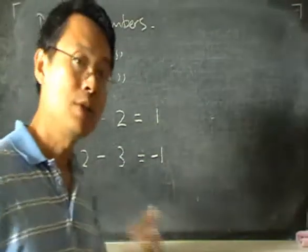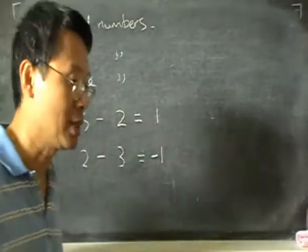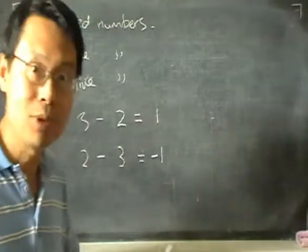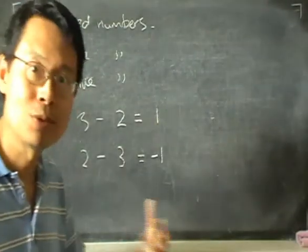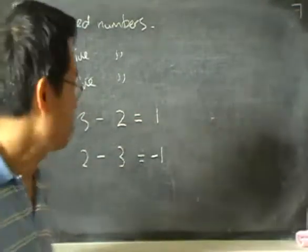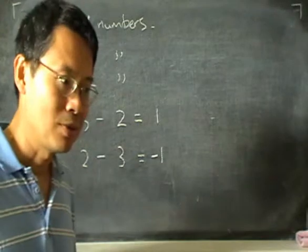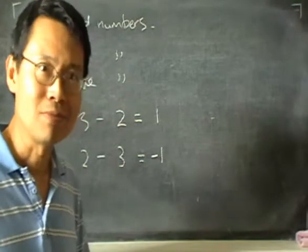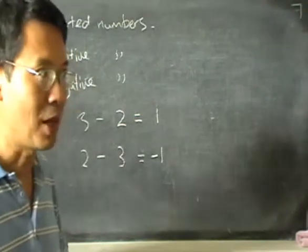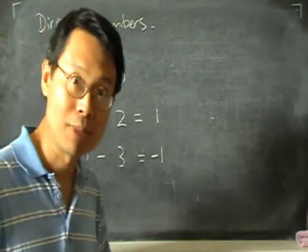But what is the use of having negative numbers? I mean, you can count things with positive numbers, right? If you are counting apples, you can count 1 apple, 2 apples, 3 apples and so on. So positive numbers are useful. But you don't have negative numbers of apples — what does it mean if I have minus 1 apple, minus 2 apples, or minus 3 apples?